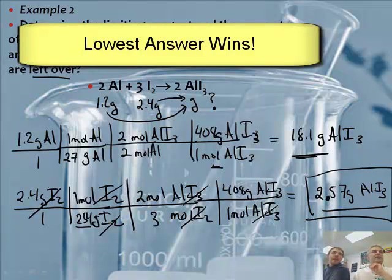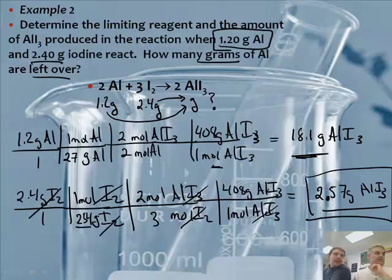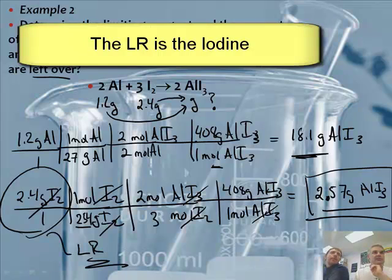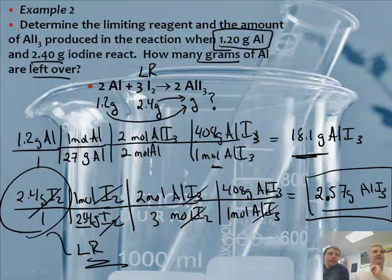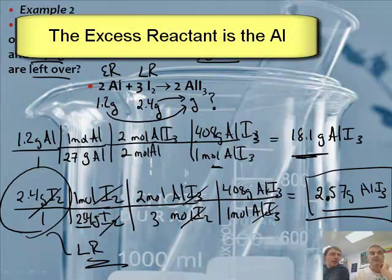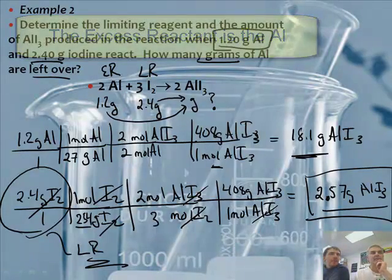So 2.57 is a smaller number than 18.1. It is. So therefore, the winner? That is the amount of product we will produce. The limiting reagent or reactant is the 2.4 grams of I2, the iodine. So the iodine is your limiting reactant or your LR, and your excess reactant is the aluminum.